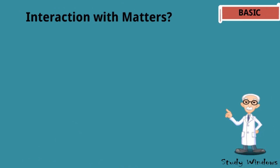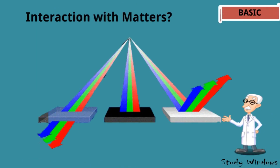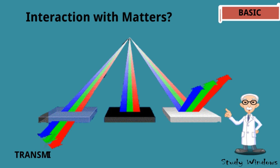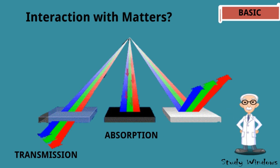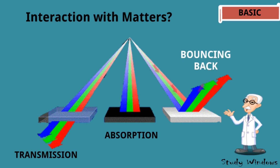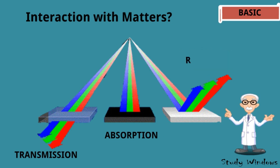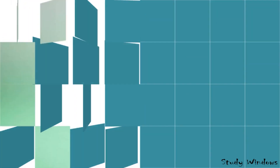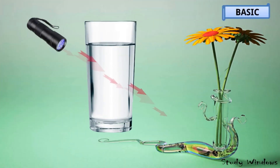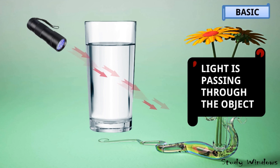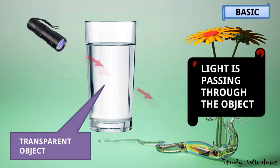Before studying, we need to know the interaction of light with matter. If light passes through the object, it is called transmission. If light is absorbed, it is called absorption. And if light is bouncing back, it is called reflection. This is a glass of water and light is passing through the object completely, so this object is known as a transparent object.